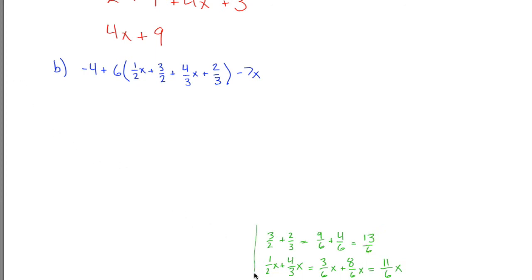And with that work, maybe I can kind of hide this over in the corner here. I can simplify what I have up here. Inside the parentheses, instead of 1 half x plus 4 thirds x, I have 11 sixths x. And instead of 3 halves plus 2 thirds, I got 13 sixths.